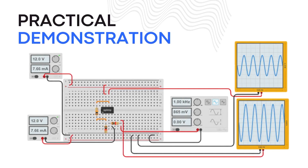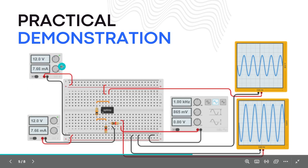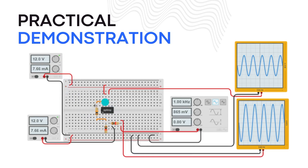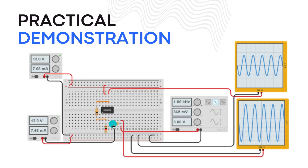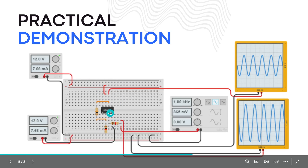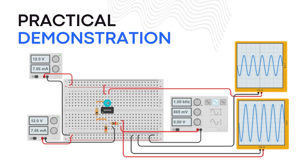Now let's look at a practical demonstration of how an op amp works. In this setup, we have an op amp connected as a voltage amplifier, taking a small input voltage and providing a much larger amplified output voltage. We have two power supplies of 12 volts each. Pin number six is the output, pin number seven and pin number four are the power supply pins — one connected to the 12V positive and pin four connected to ground.